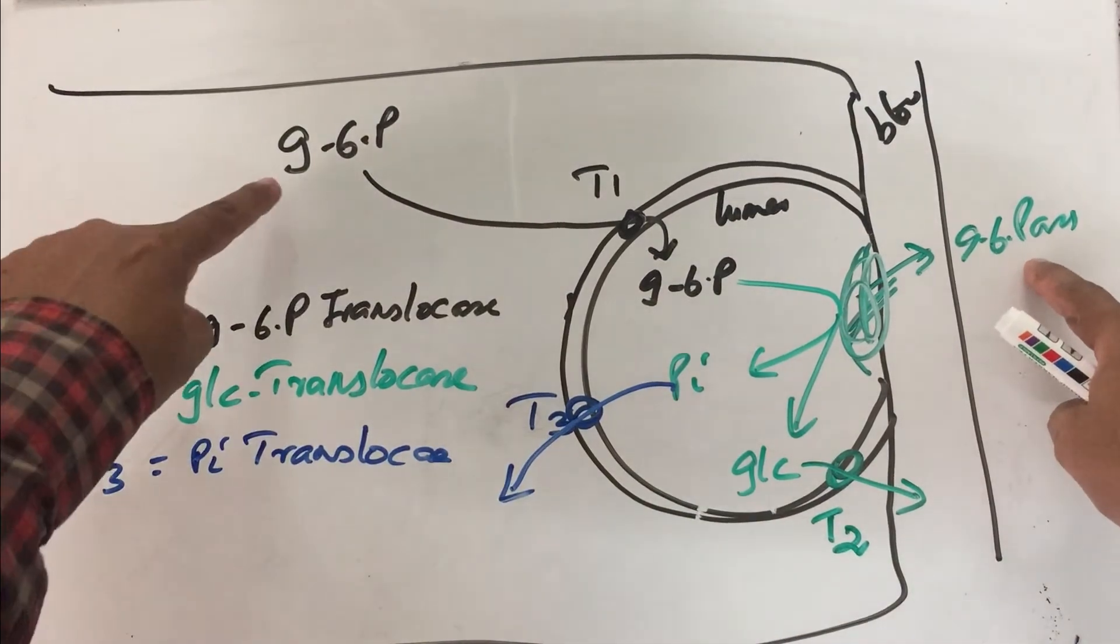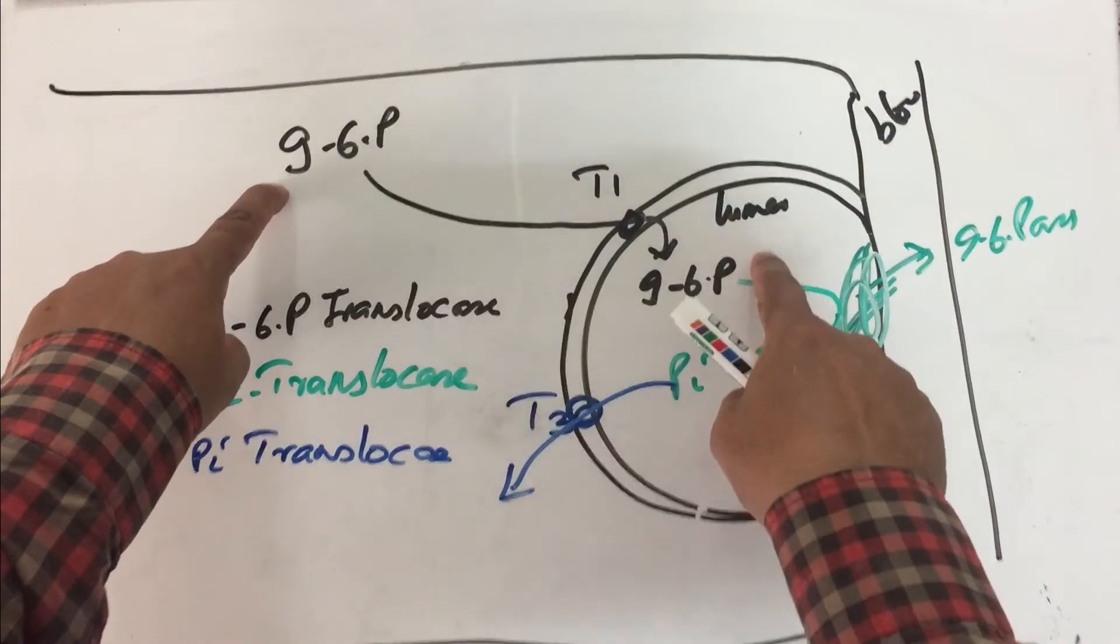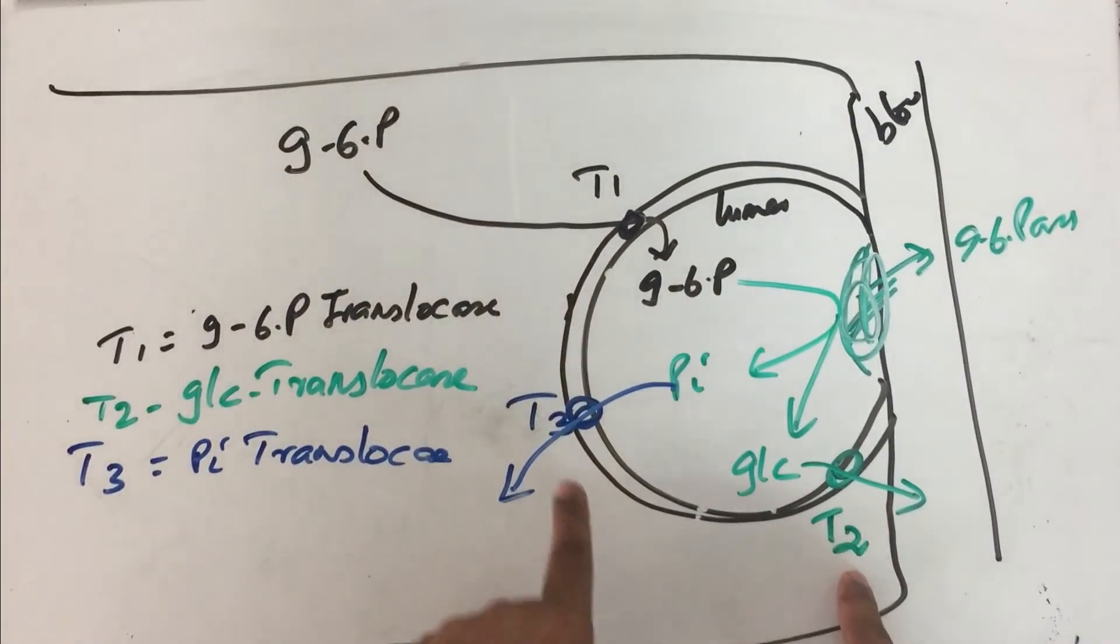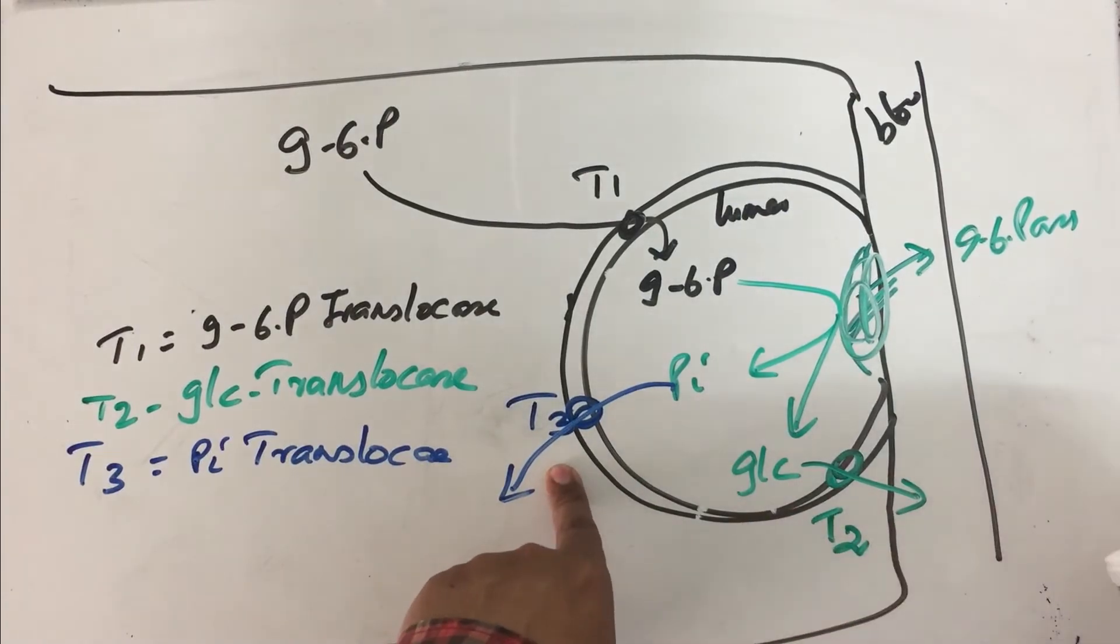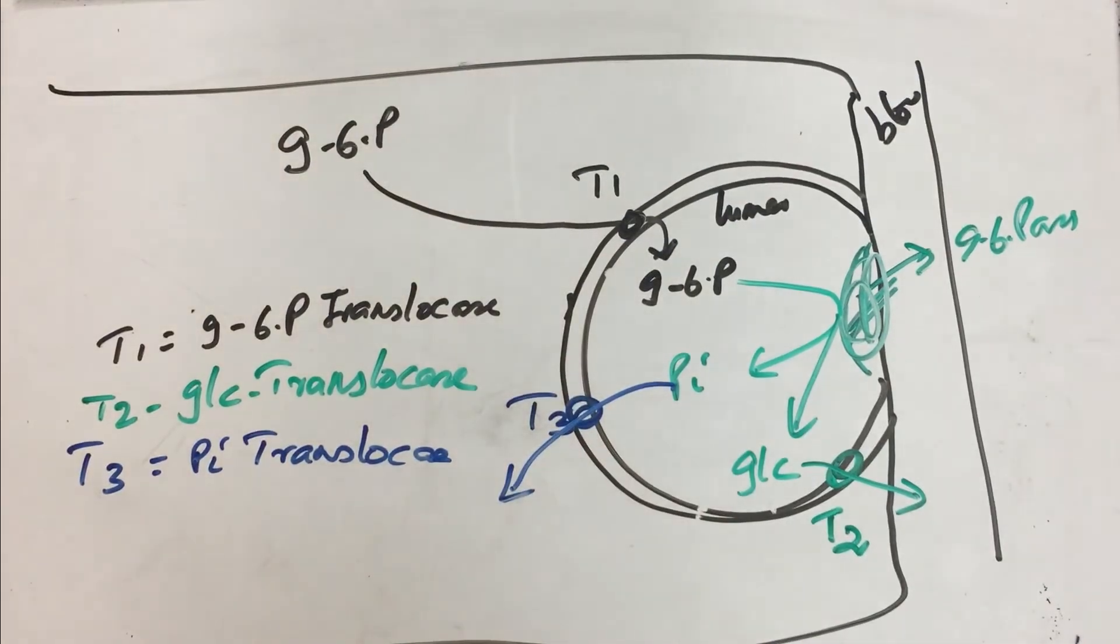So look at the complex. You have an enzyme which will hydrolyze, and you need three other supporting proteins. One to take it inside, T1, then T2 and T3. T2 for transporting glucose into blood, and T3 transporting inorganic phosphate back into the cytoplasm. So this is the complex mechanism by which it will maintain blood glucose level. This is functional especially in liver and kidney. You will not find it in tissues other than liver, kidney and intestine. So this is how the entire gluconeogenesis occurs.